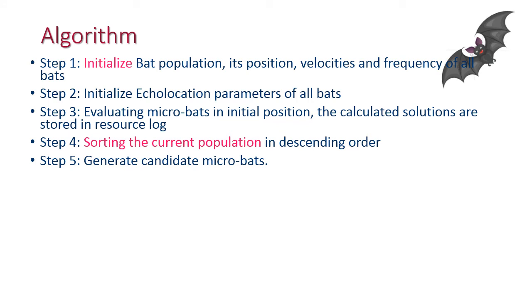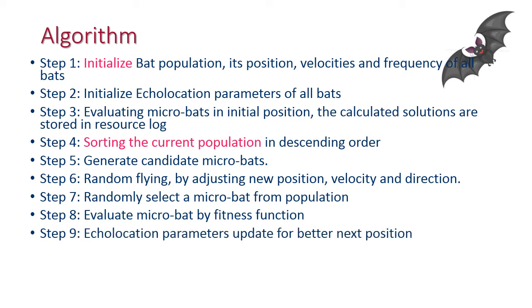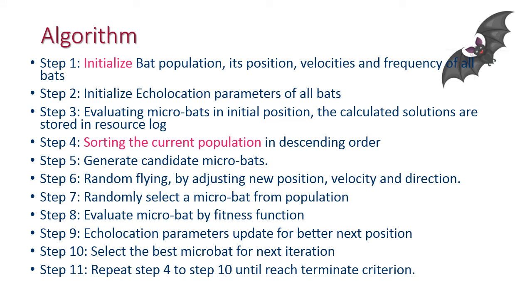Generate candidate microbat random flying by adjusting new position, velocity, and direction. Randomly select a microbat from the population. Evaluate microbat by fitness function. Update echolocation parameters for better next position. Select the best microbat for next iteration. Repeat step 4 to step 10 until reaching the terminate criterion.